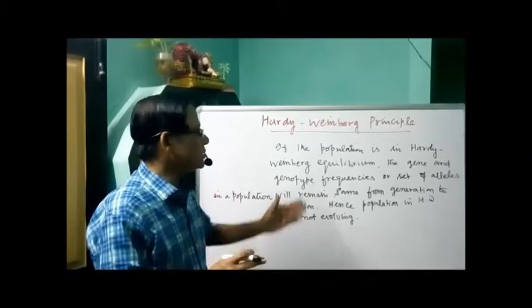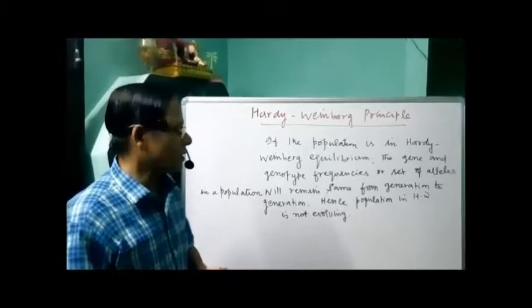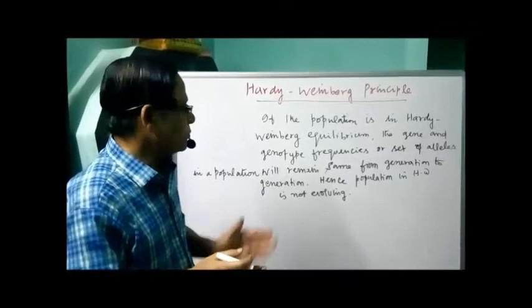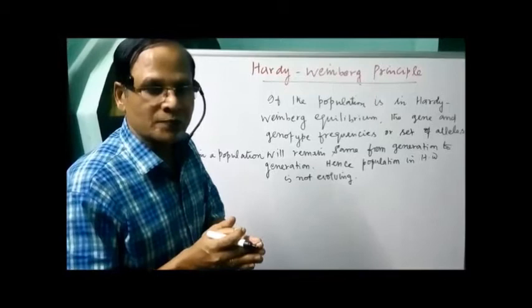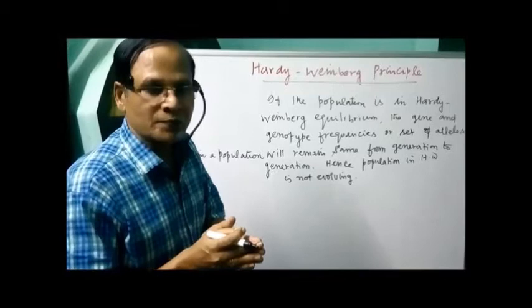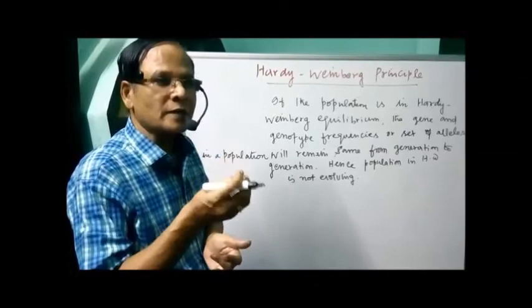If there is any variation in Hardy-Weinberg equilibrium, that results in the formation of new species. But here it remains the same for a number of generations. The conditions required for the population not to evolve are: absence of mutation, natural selection, gene flow or migration, genetic recombination, and genetic drift. If these factors are absent, then only this Hardy-Weinberg equilibrium is possible.